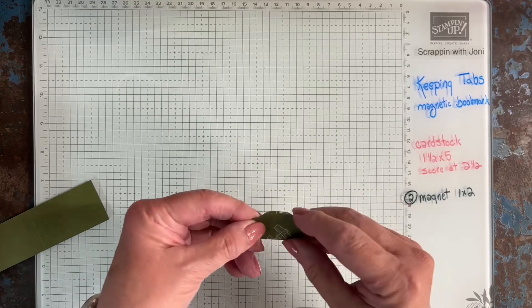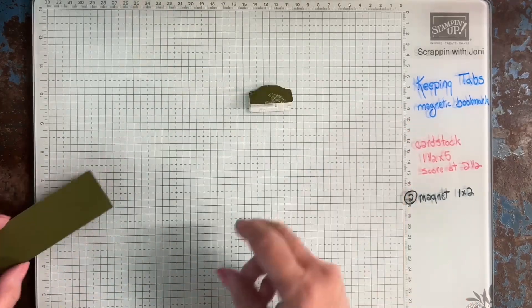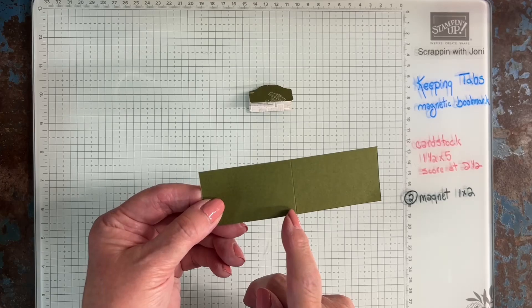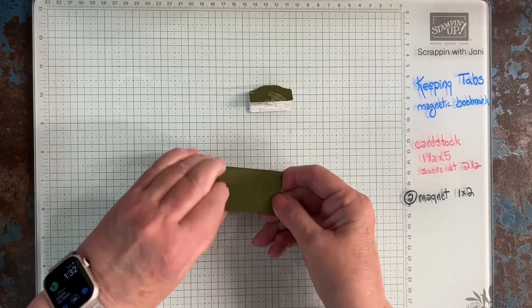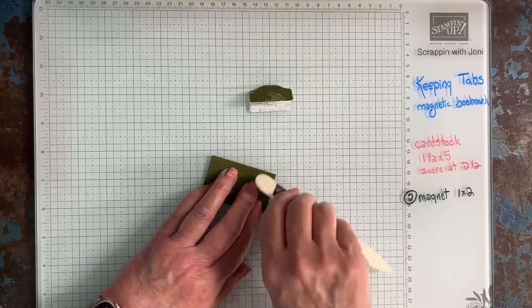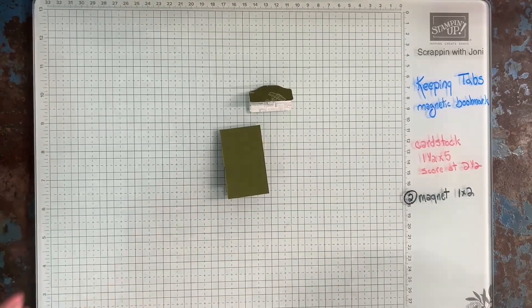And then I'm just going to fold it down. My paper is one and a half by five scored at two and a half. And I'm going to fold it. And then I'm going to grab my bone folder and just give it a nice crisp fold.